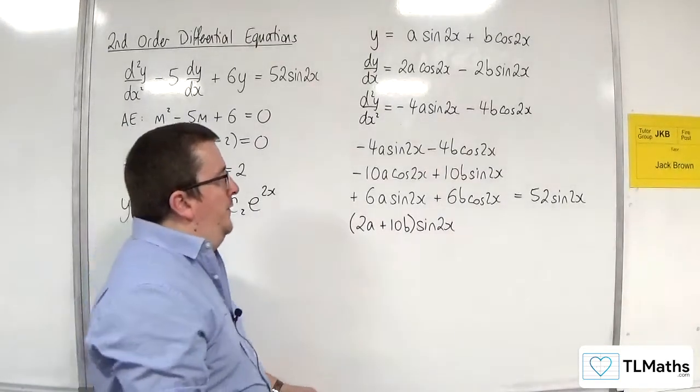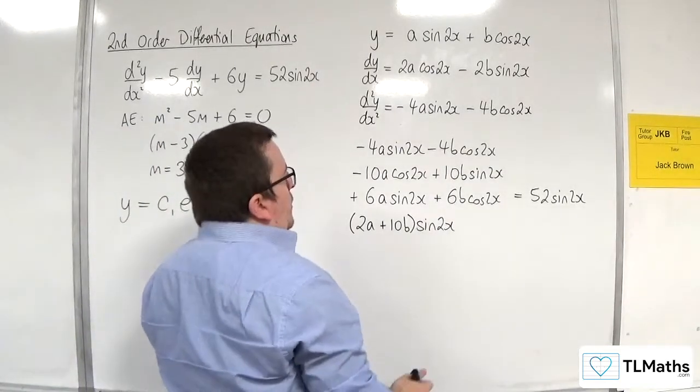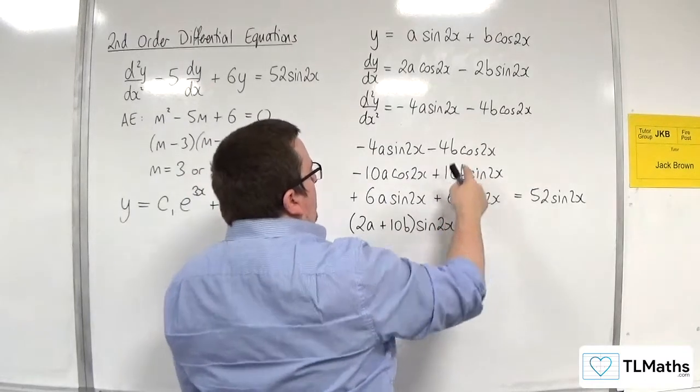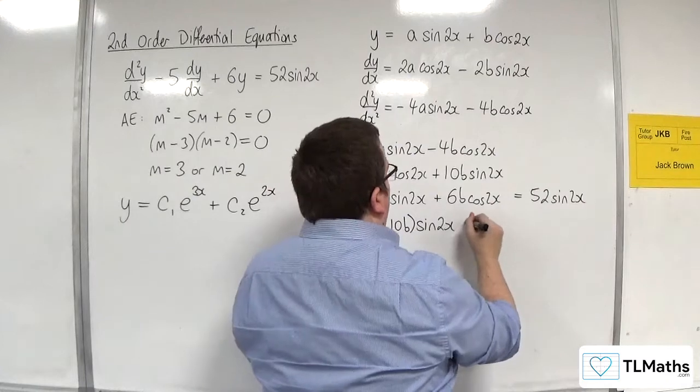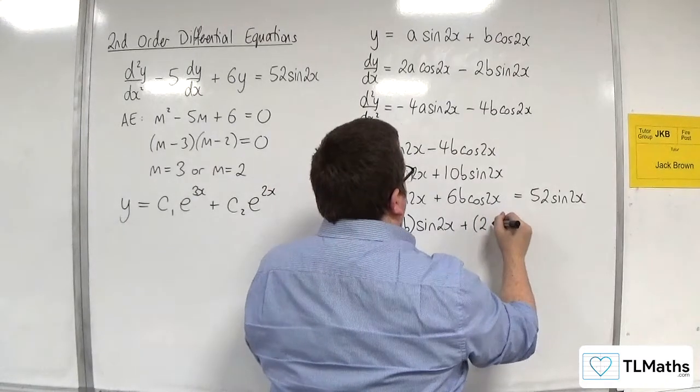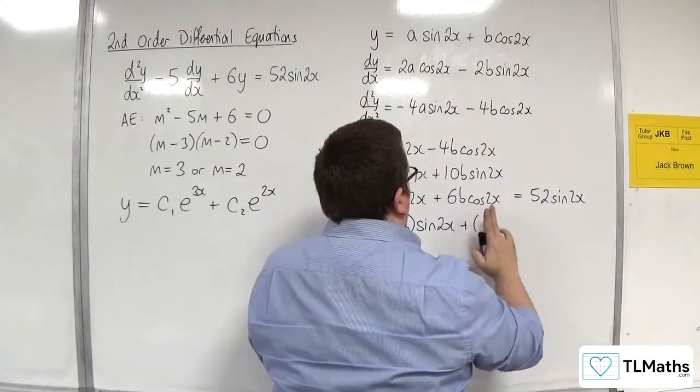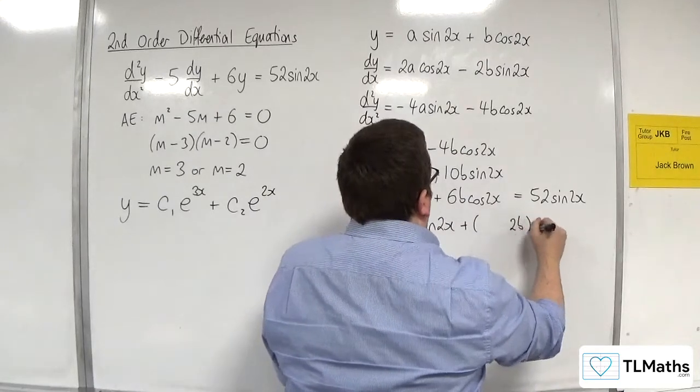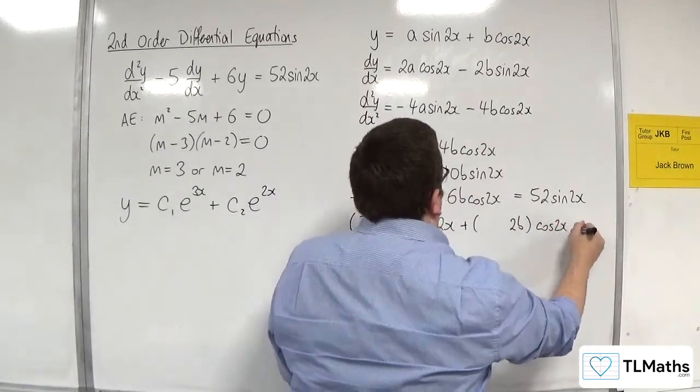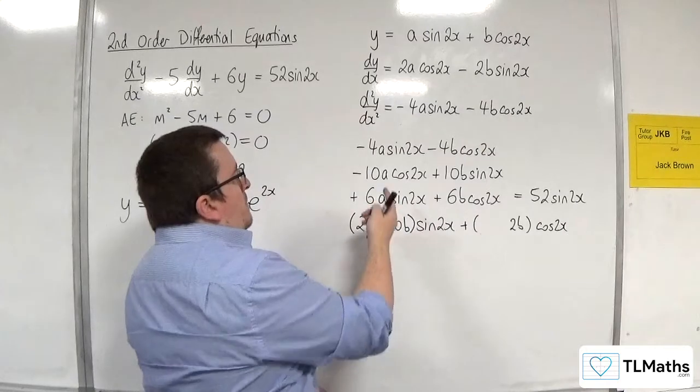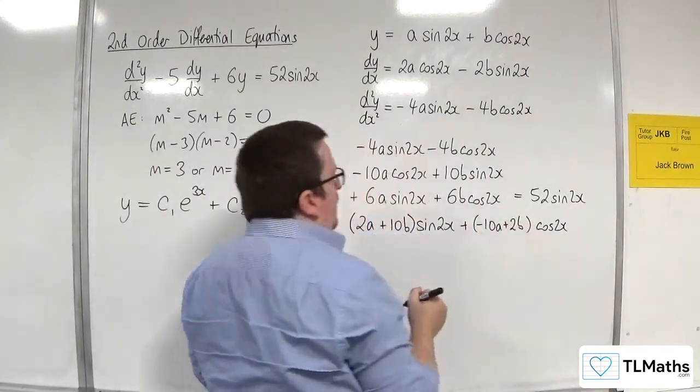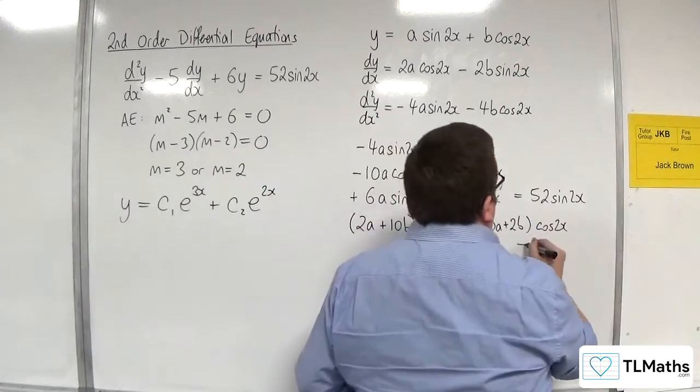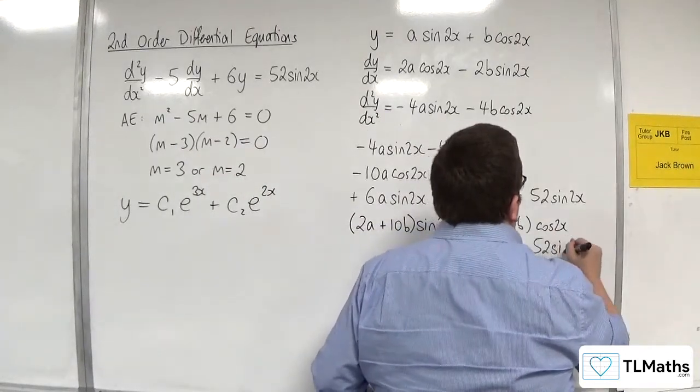As for the cosines, I've got the minus 4b cosine of 2x and a 6b cosine of 2x. So, that'll be 2b cosine of 2x left. So, plus 2b. Let's write it this way around. And I've got the minus 10a there. So, minus 10a plus the 2b cosine of 2x. And that's got to be equal to the 52 sine of 2x.